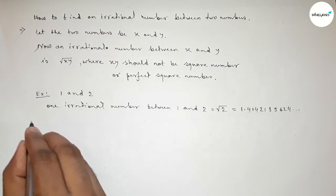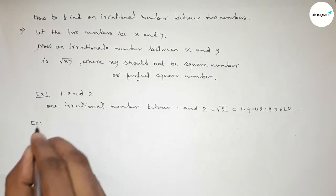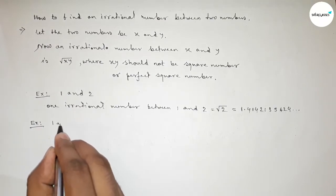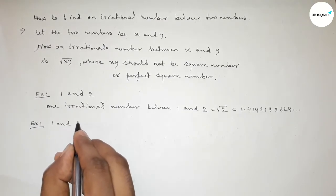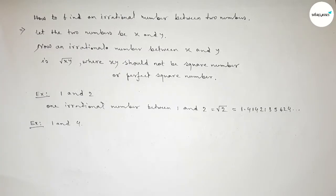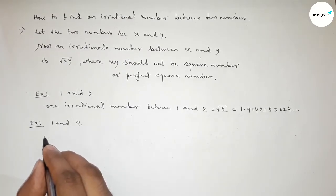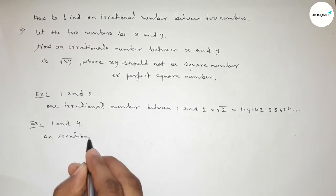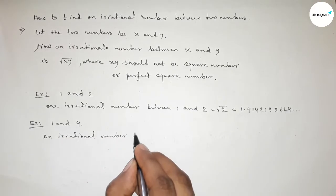Next, taking another example to clear the concept perfectly. So now here taking two numbers, 1 and 4. Now I'm going to apply the above method to find out an irrational number between 1 and 4.